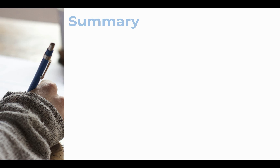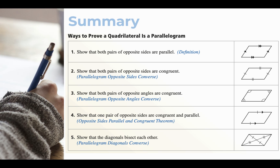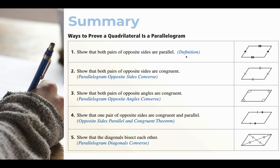I'm going to work backwards — I'm going to give you all the information you need to know and summarize first, and then we'll go through the details of each one. Here are five ways to know that a quadrilateral is a parallelogram. If you look at these five ways, there's really just one brand new thing at number four, but all of these other things are just converses. And this is kind of the converse of the definition — if you can show that it meets the definition, then that's how you know that a quadrilateral is a parallelogram.